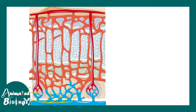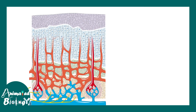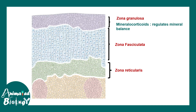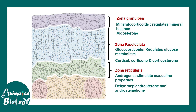If we look at the adrenal cortex, there are three different layers: zona glomerulosa, zona fasciculata, and zona reticularis. The outer layer secretes mineralocorticoids, the inner layer secretes androgens, and the middle layer — the zona fasciculata — secretes glucocorticoids like cortisol.